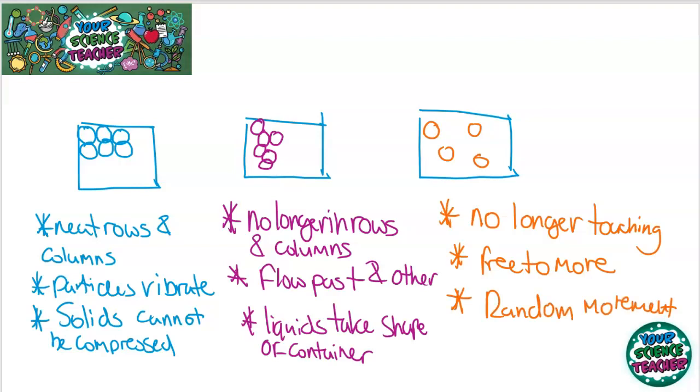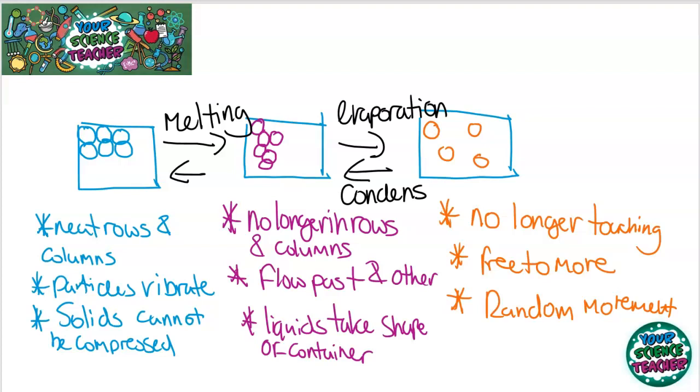As you've probably learned in class, these states of matter are not permanent. You can change the state by heating or cooling down. Going from a solid to a liquid is called melting. Just think about chocolate when you put it in the microwave. Going from a liquid to a gas is called evaporation. Going from a gas to a liquid is called condensation, and going from a liquid to a solid is called freezing.